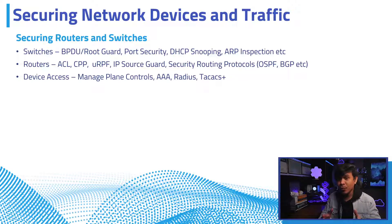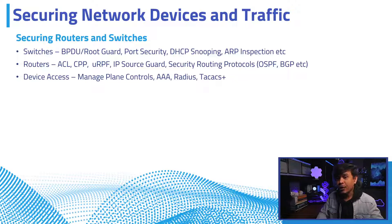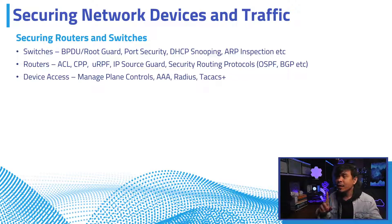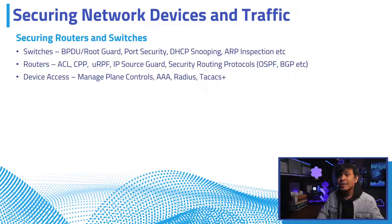For routers, you can enable various security protections: Access Control Lists (ACL) for filtering, IP Source Guard for IP spoofing, and security for routing protocols such as OSPF, BGP, EIGRP, and many more. For both routers and switches you can enable device access security via management plane controls, and enable AAA features such as RADIUS and TACACS. AAA stands for authentication, authorization, and accounting.